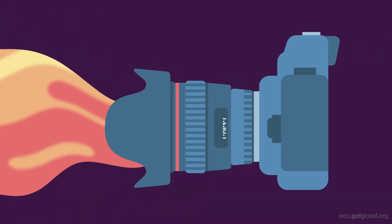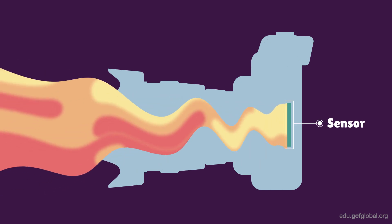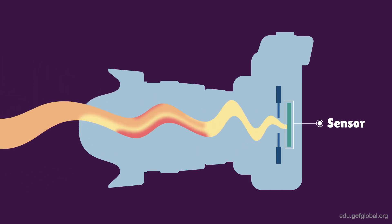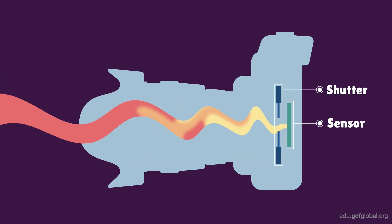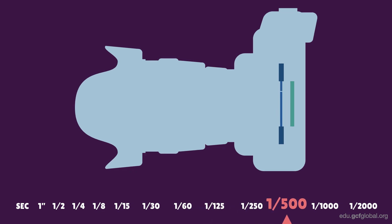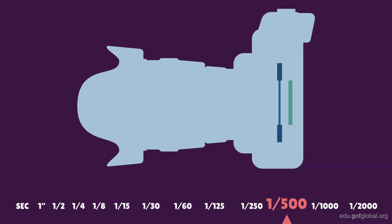Shutter speed is what controls how much light reaches the camera's sensor or film. It is the length of time that the shutter will remain open, allowing light to reach it. Shutter speed is time-based and measured in seconds or fractions of seconds. The less time the shutter stays open, the shorter the exposure time.